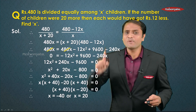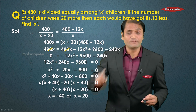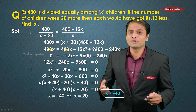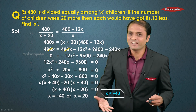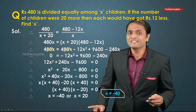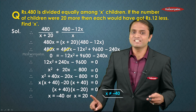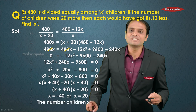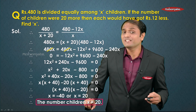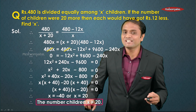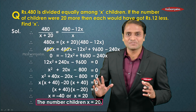This gives x equals minus 40 or x equals 20. Since x represents the number of children, it cannot be negative. Therefore x cannot equal minus 40, so x equals 20. The number of children is 20, which is the final answer.